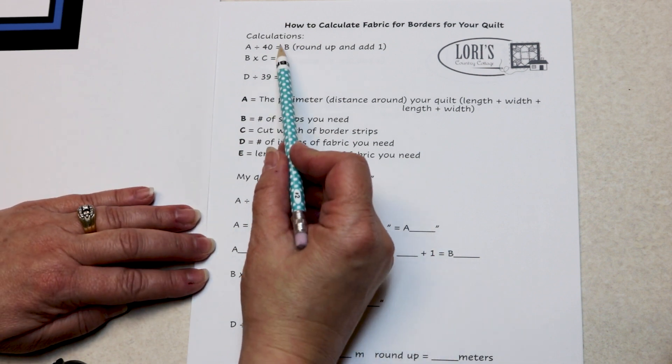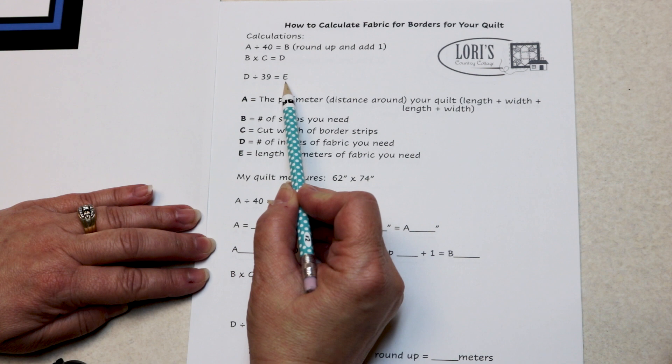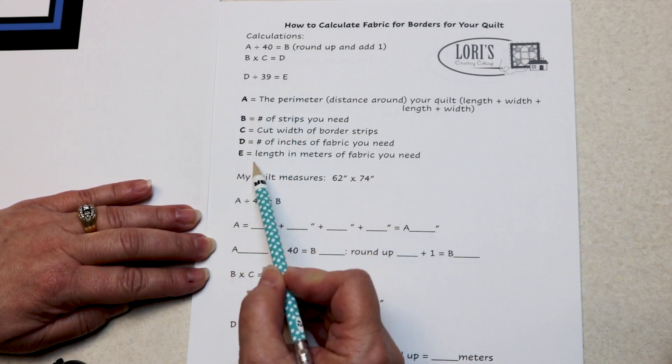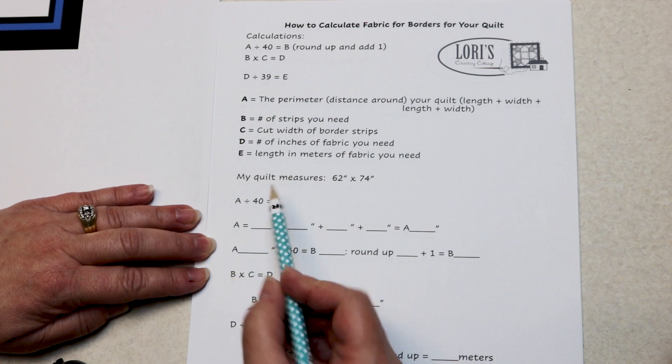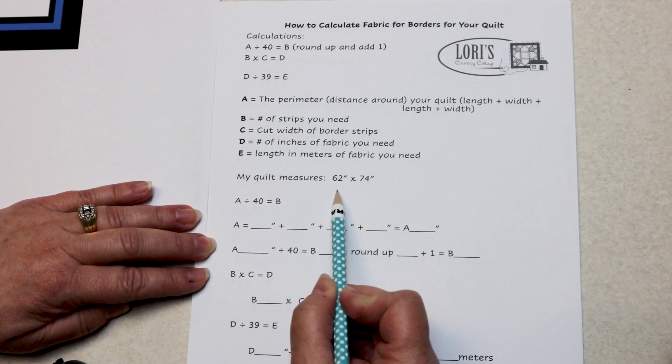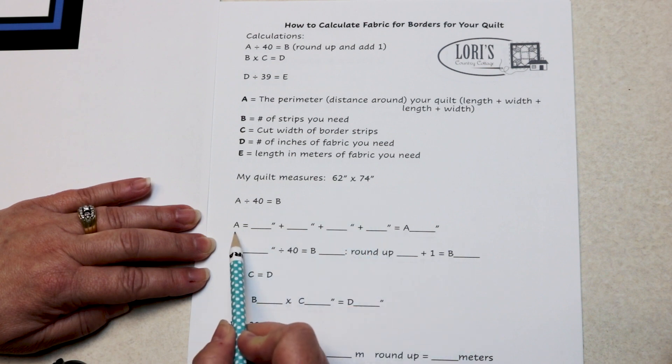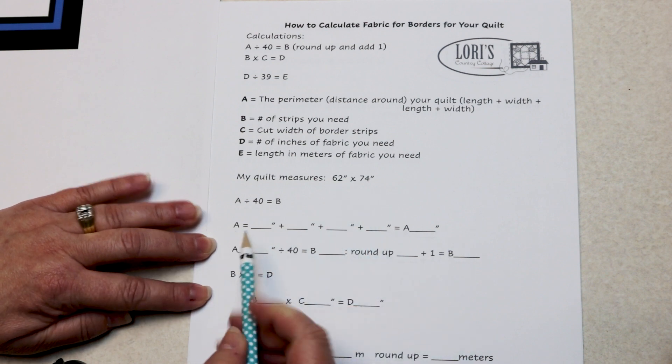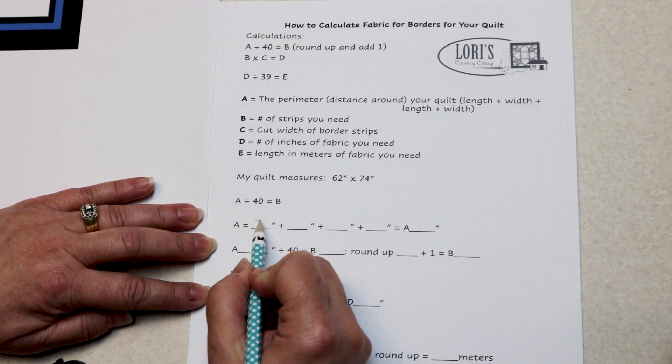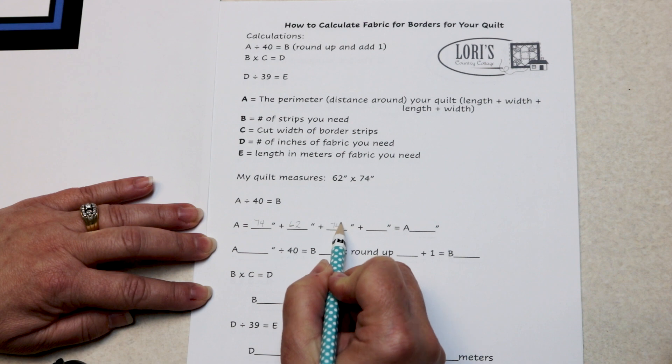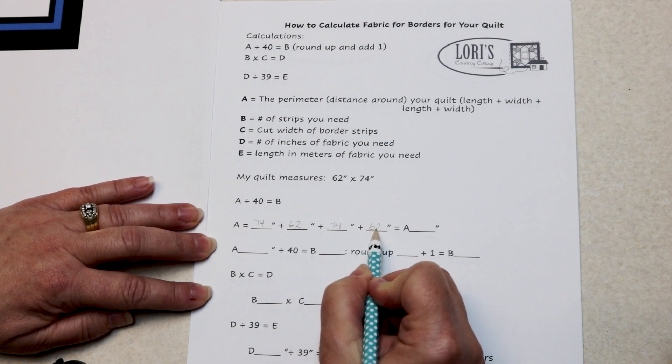We need to make three calculations using these five variables, and we'll work them out as we go. So my quilt measures 62 by 74. To figure out A, which is the perimeter or the distance around my quilt, I need 74 plus 62 plus 74 plus 62.